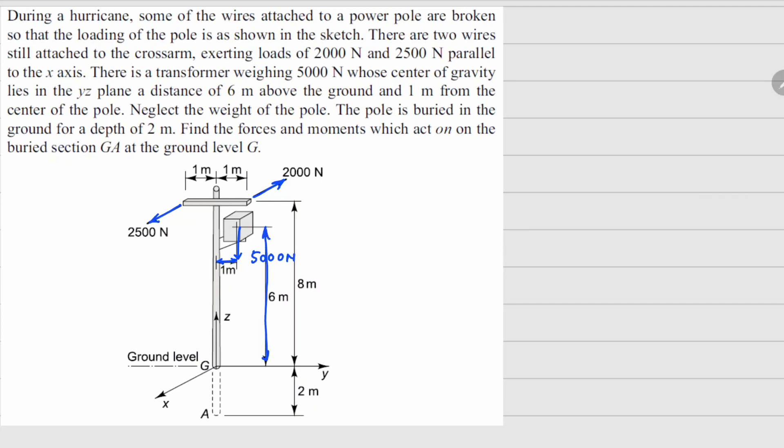We have to neglect the weight of the pole. The pole is buried in the ground for a depth of 2 meters. Find the forces and movement which act on the buried section GA at the ground level G.